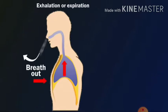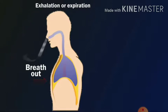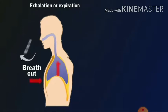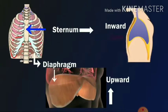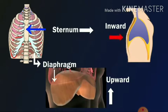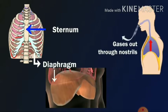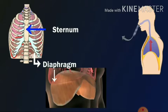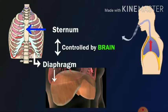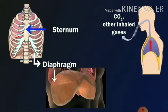Now if we look at breathe out — exhalation or expiration — in this process we give out carbon dioxide and water vapor. The diaphragm moves upward, and the sternum moves inward when we breathe out. Gases come out through the nostrils. All these functions are controlled by the brain. Along with CO2, many other gases are also present, because air is a mixture of many gases.